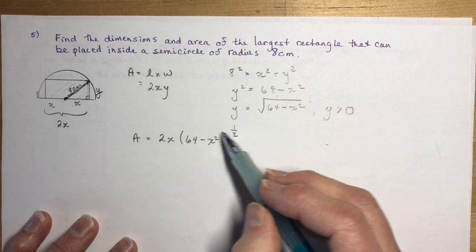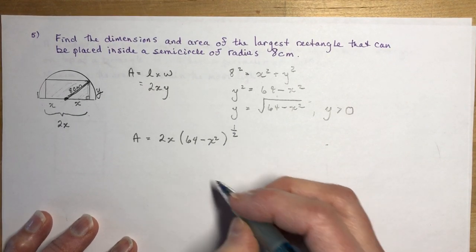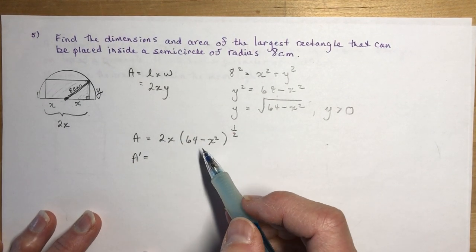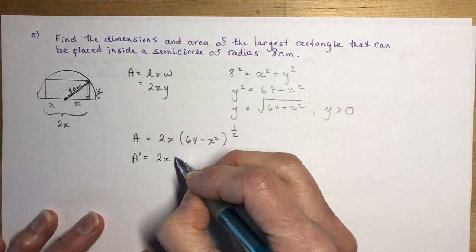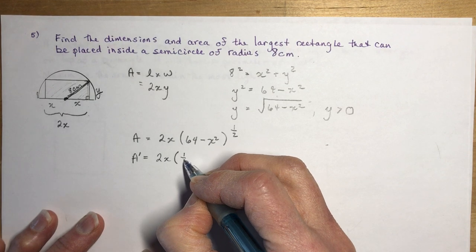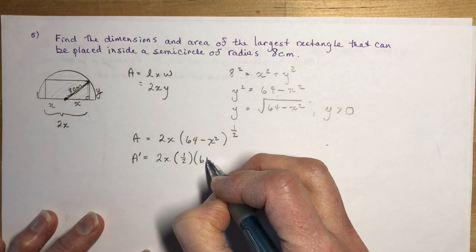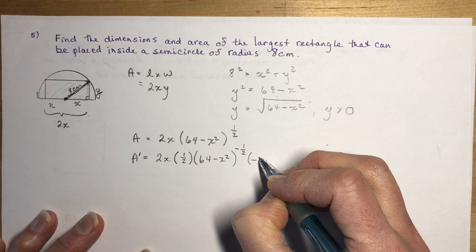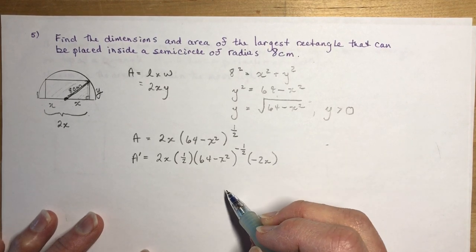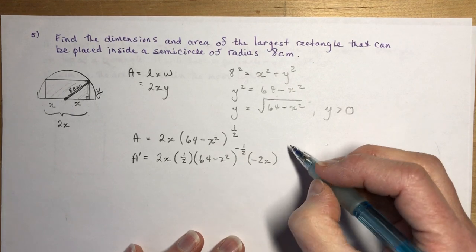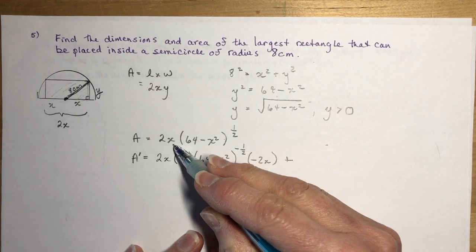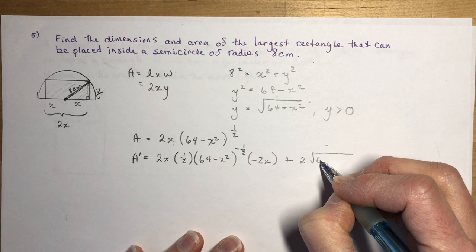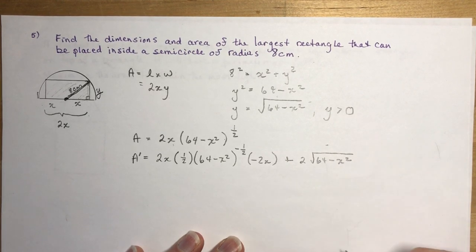Now substitute into the area equation: A = 2x · (64 − x²)^(1/2). This is a product, so use the product rule. First times the derivative of the second: 2x · (1/2)(64 − x²)^(−1/2) · (−2x). Don't forget the chain rule — the derivative of the inside is −2x. Make sure to use brackets throughout.